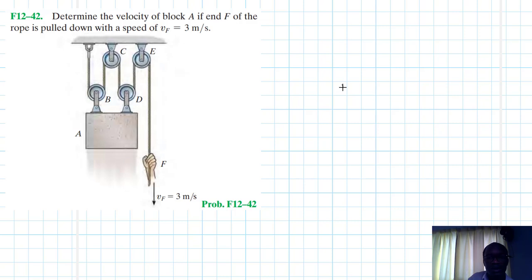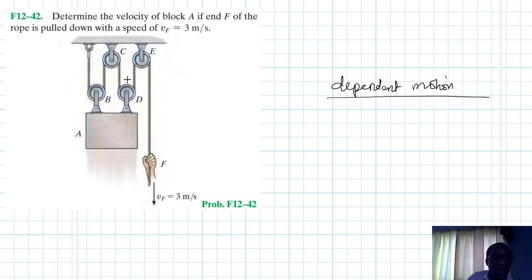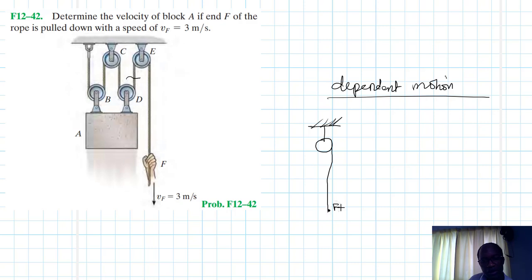We are dealing with what we call dependent motion of two particles. Let's focus on this part. We have a pulley setup — on one end is F, where we have a velocity of vF.